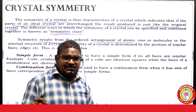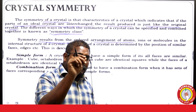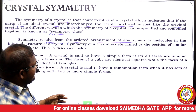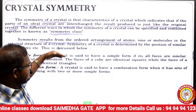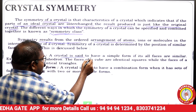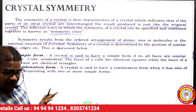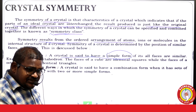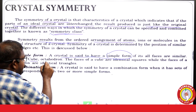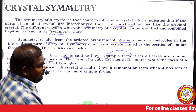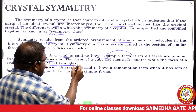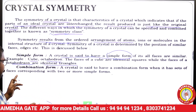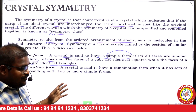A crystal is said to have a simple form if all its faces are similar — for example, a cube has identical square faces while an octahedron has identical triangular faces. A crystal is said to have a combination form when it has a set of faces corresponding to two or more simple forms.